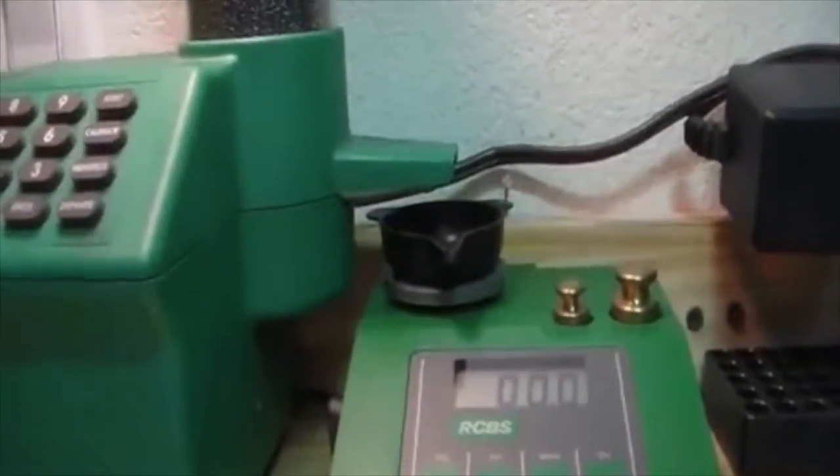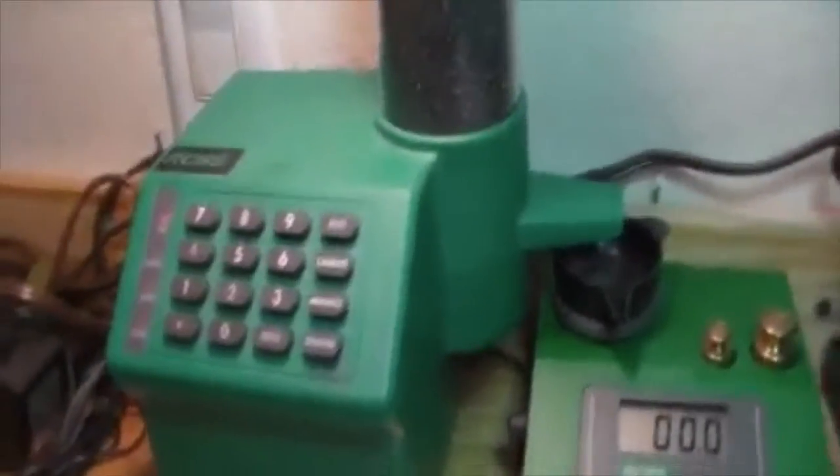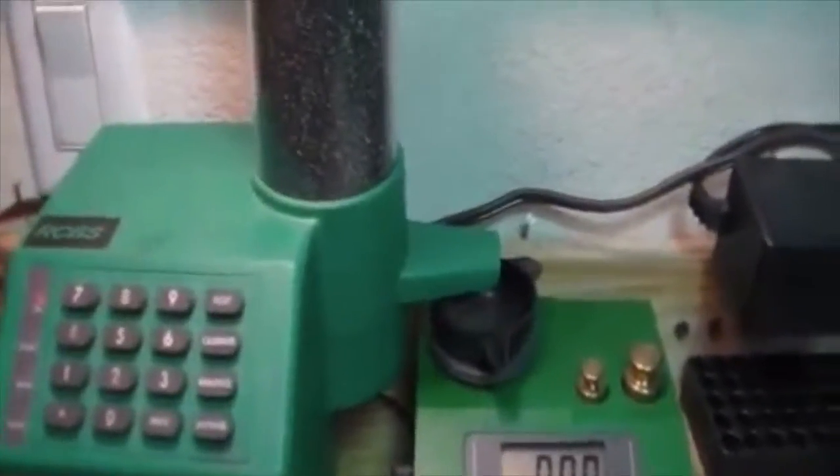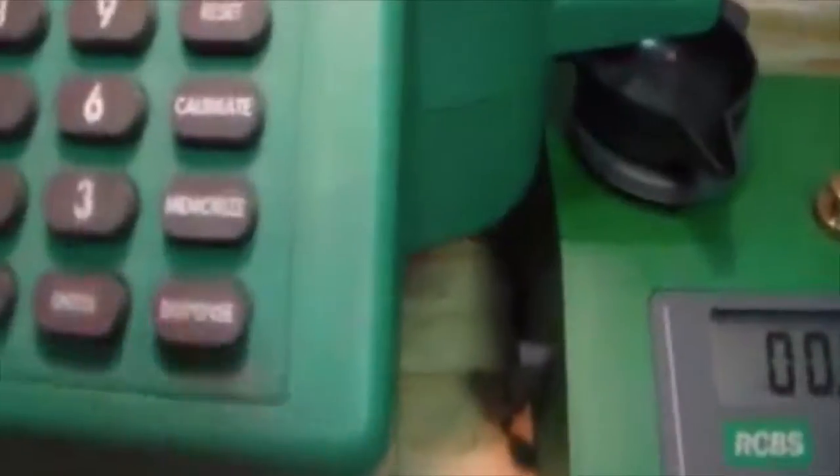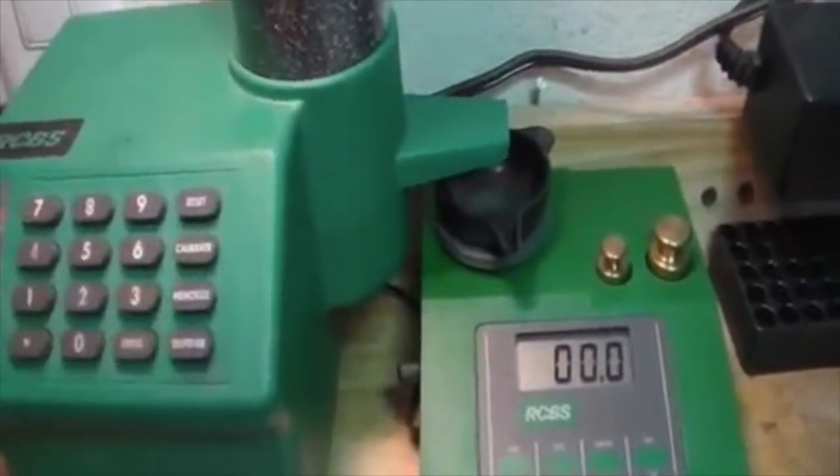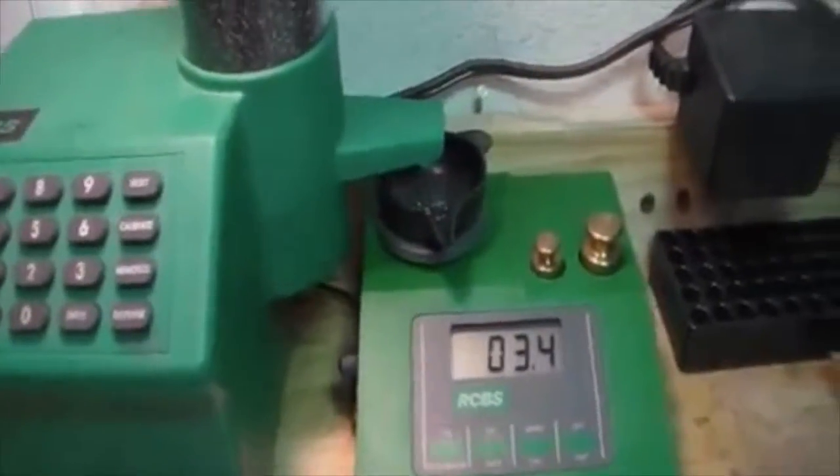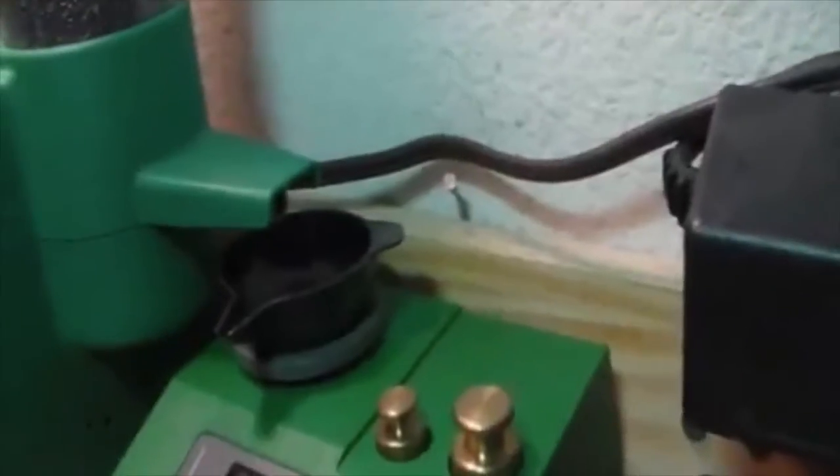So the next thing we've got to do is we have to calibrate this RCBS. I was thinking maybe this is why it didn't have an on-off switch, because they put this button on here to calibrate. So we hit 'calibrate' and now we just sit back and enjoy watching the powder flow.